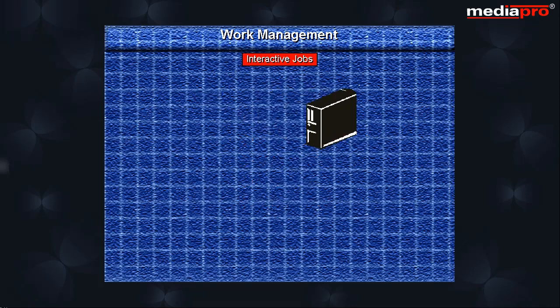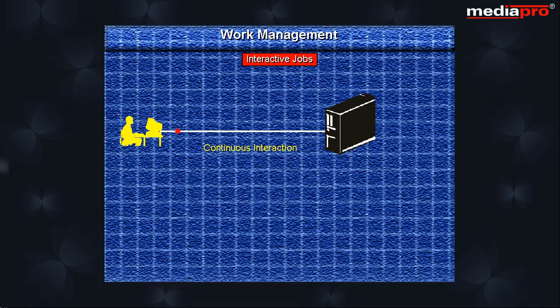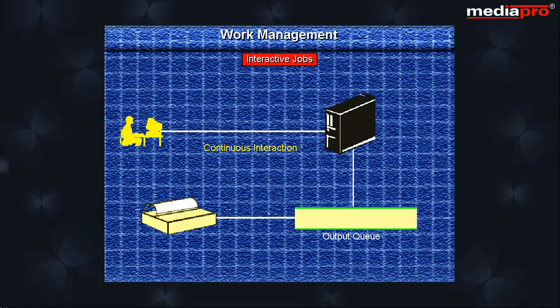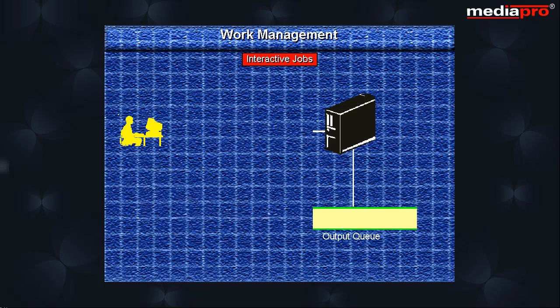An interactive job starts when the user signs on and continues until he signs off. If the job generates any printed output, it will be put into the spooled file and placed on the output queue. Output queues in turn are associated with one or more printers. A job waits on the output queue until the spooled file is printed. When the user signs off, the job ends.